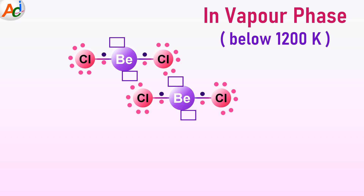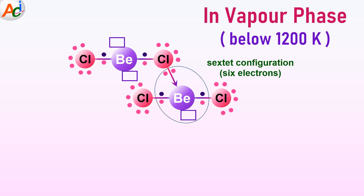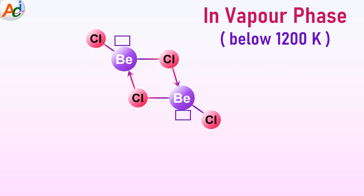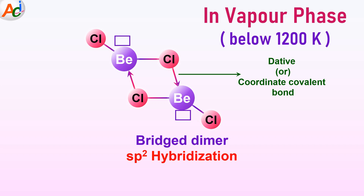As the temperature decreases, the molecule tends to undergo dimerization by accepting an electron pair from the chlorine atom of another beryllium chloride molecule. This results in a sextet configuration, with beryllium now having six electrons in its valence shell. Simultaneously, the beryllium atom of the other molecule also accepts an electron pair from the first one. This process leads to the formation of a dimer, causing a shift in hybridization to SP2. For clarity, electron representation is omitted.